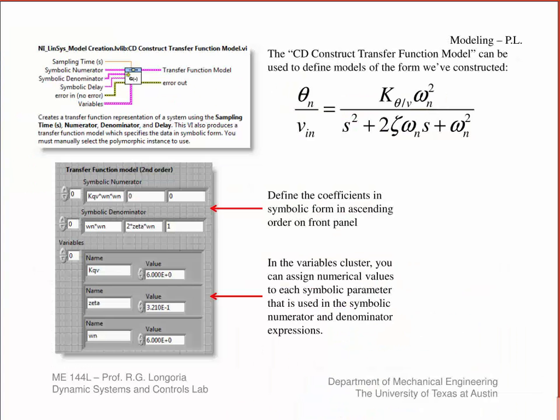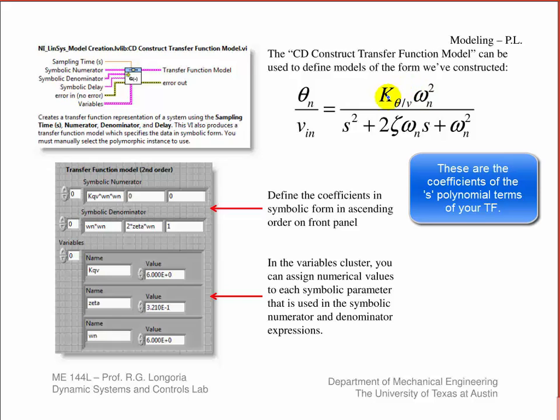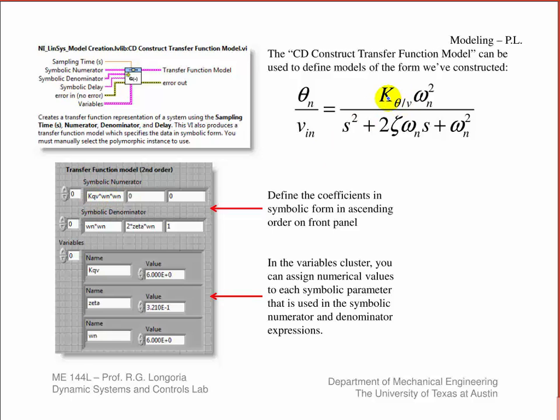Look at this slide. This CD Construct Transfer Function allows you to build models of this sort. You could have your own model, higher order transfer function. This is the numerator and this is the denominator. It allows you to determine, based on the number of elements you'd have in these cluster definitions of the numerator and denominator. For example, here you have three parameters that you need to define. Here, there's no s on top, so it's only a zeroth order, so you only have the constant term. Here's what the front panel's going to look like. The numerator only has K_qv, which is this term here.